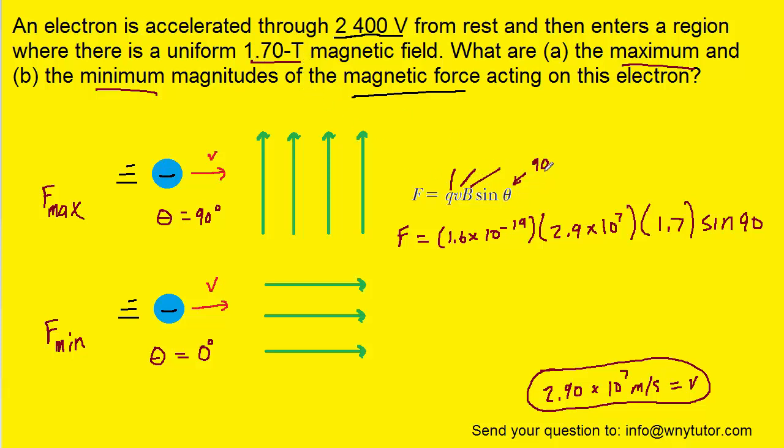And then the angle of 90 degrees, which again produces the maximum force. The sine of 90 is just 1, so you can actually eliminate that from the equation. And then you can pick up your calculator and process the following. And you should get approximately 7.9 times 10 to the minus 12 newtons as the maximum force.